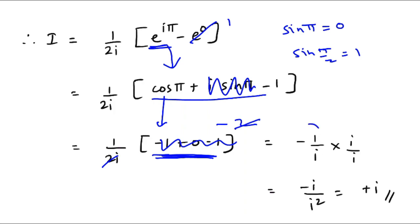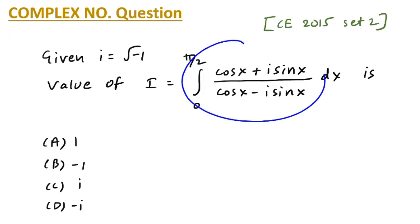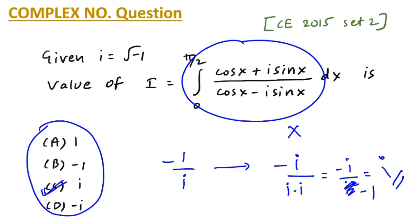So minus 1 minus 1 gives minus 2; this 2 and the 2 in the denominator cancel out. The final expression is minus 1 over i. But there is no option showing minus 1 over i, so you need one more step. Multiply and divide by i: you get minus i upon i squared, and since i squared equals minus 1, the final answer is i, which is option c. Always remember — if you are not getting a matching option, you may have only a partial answer and need a few more steps.